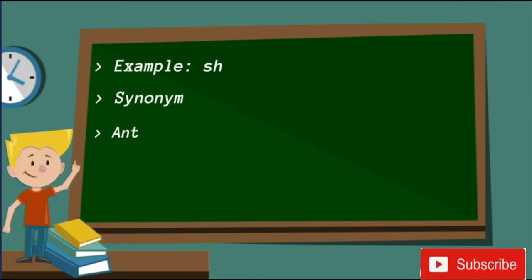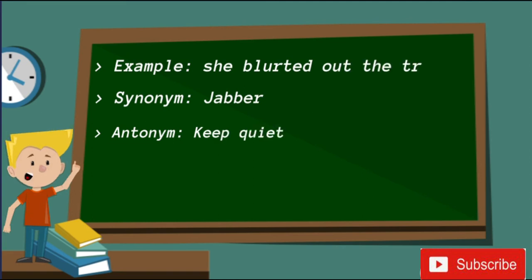For example, she blurted out the truth. The synonym of Blurt is jabber, and the antonym of Blurt is keep quiet.